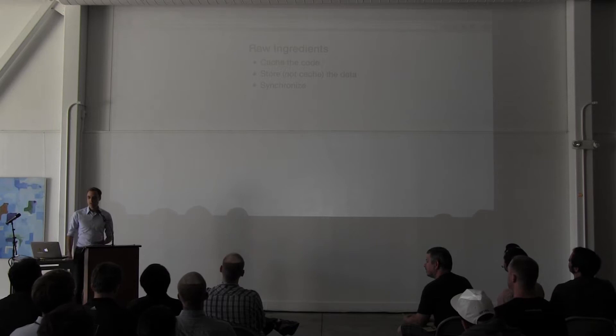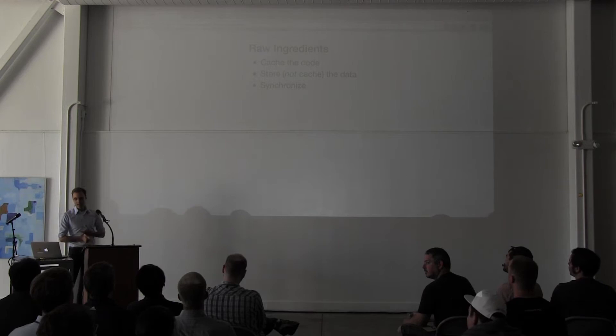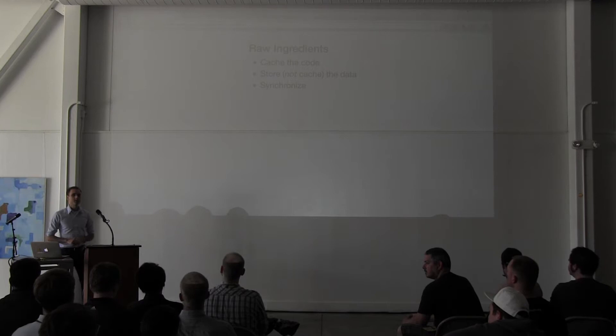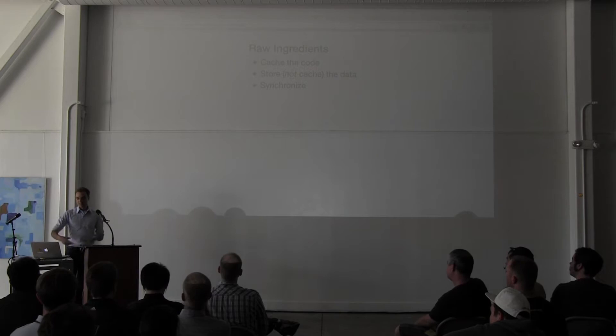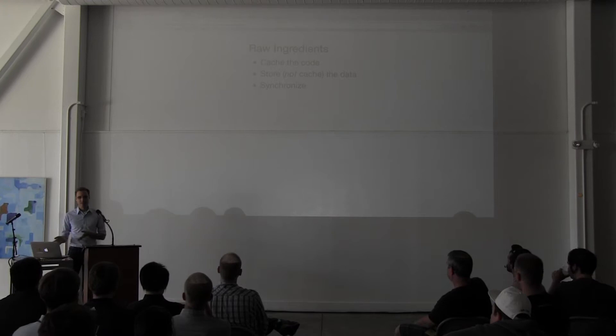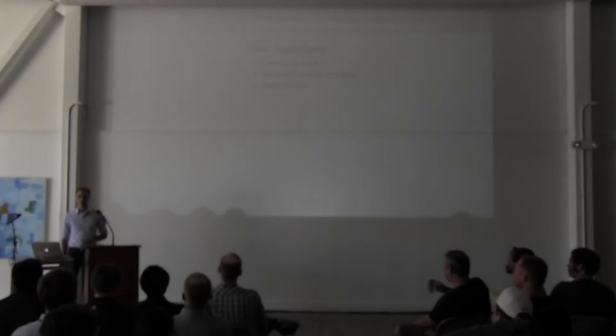The raw ingredients of any offline app: you need to cache the code, you need to store the data — and I say store, not cache, because it might be the only copy of that data you have if it's a beautifully composed post that hasn't reached the server yet — and then you need to synchronize. These things are each challenging. Some are solved problems today and some are very much not. The Orbit.js talk was a fantastic lead-in because that's a really exciting effort to try to bring the community together on some of these things.